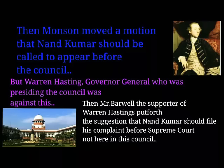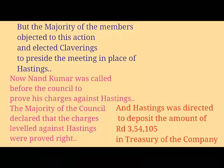Monson then moved a motion that Nandkumar should be called to appear before the council. Warren Hastings, who was presiding the council at the time, was against this. Mr. Barwell, the supporter of Warren Hastings, put forth the suggestion that Nandkumar should file his complaint before the Supreme Court and not before this council. But the majority, who were against Warren Hastings, objected and elected Clavering to preside the meeting in place of Hastings.